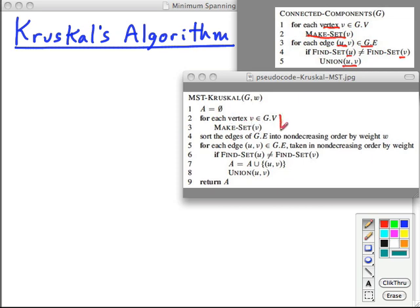So for each vertex, we're going to make it into its own singleton set in the disjoint set data structure. And here's the sort the edges. So here's the greedy strategy. We're going to do it in non-decreasing order, in other words, cheapest ones first by the weight. And in that order, we'll consider each edge, this line here.